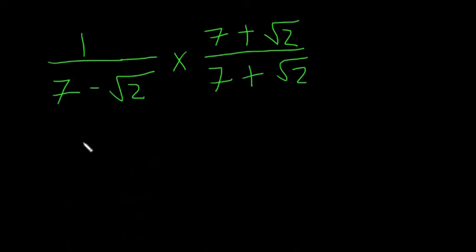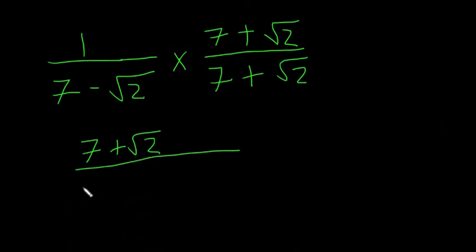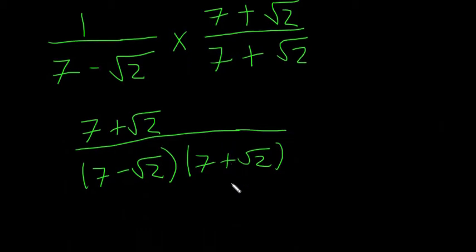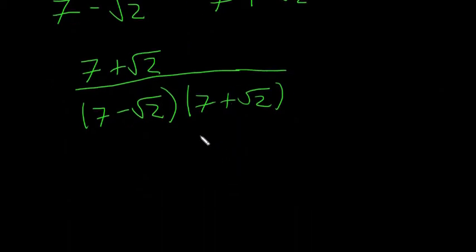So the top is just going to be 7 plus the square root of 2. And on the bottom, we're going to have (7 minus √2)(7 plus √2). Have a look at that and see if you notice anything about it — I'll point it out at the end.